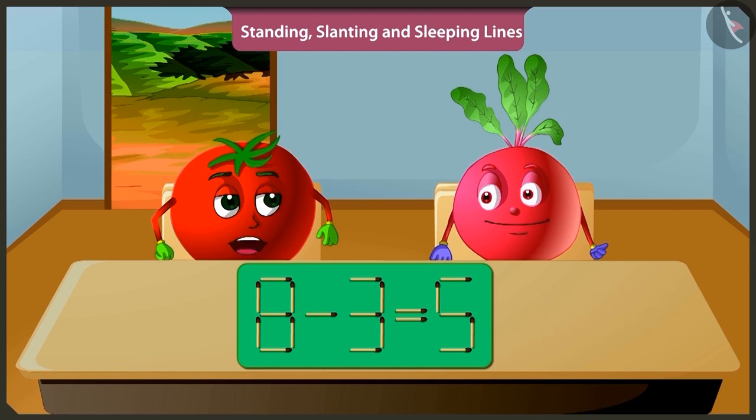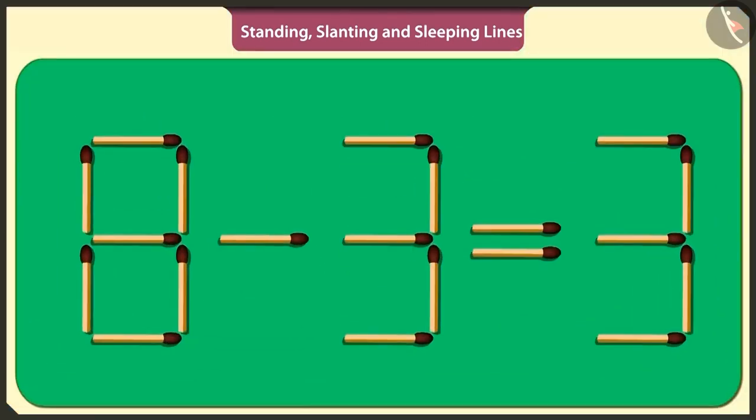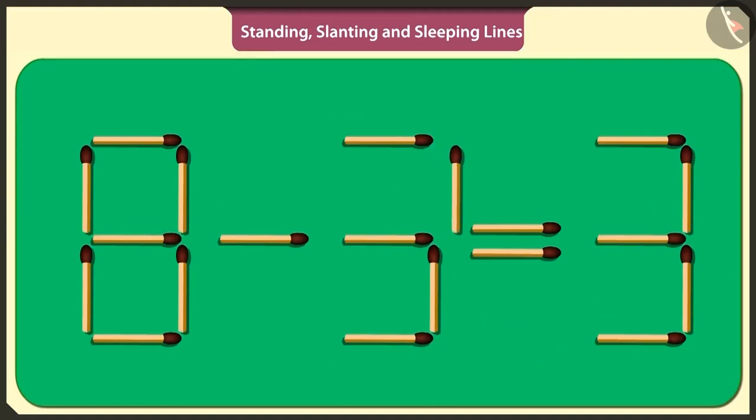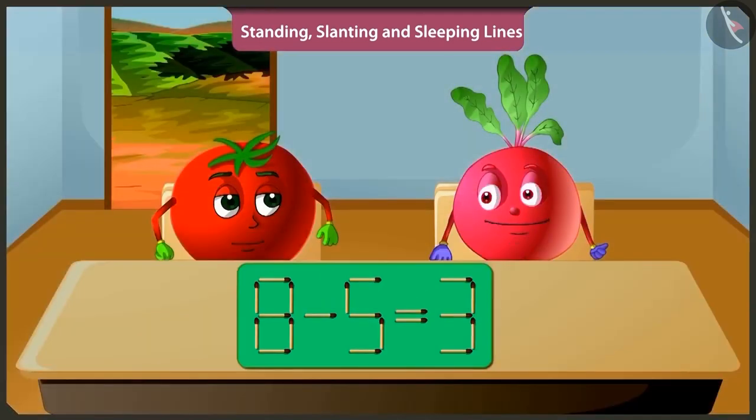Pittu, there is another way to solve this puzzle. What's that? Look, now out of the subtracted number three in this puzzle, by removing this standing matchstick and placing it vertically here, then three is converted to five and thus the puzzle will be solved. Oh yes, when we subtract five from eight, we get three.